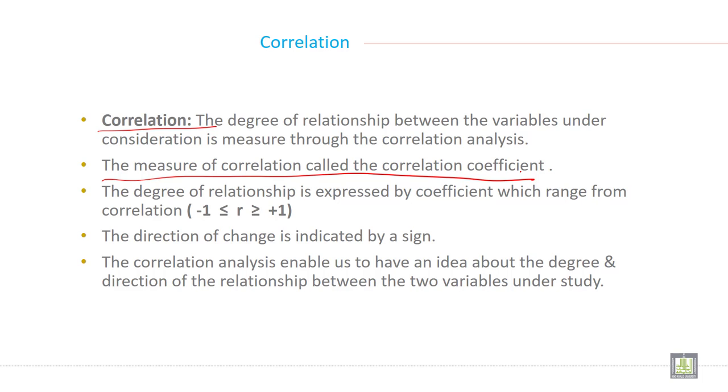The degree of relationship is expressed by coefficient which range from correlation minus 1 to plus 1. The direction of change is indicated by a sign. The correlation analysis enables us to have an idea about the degree and direction of the relationship between the two variables under study.